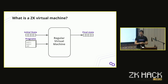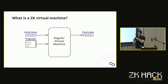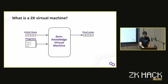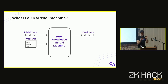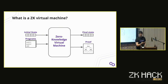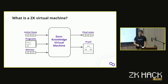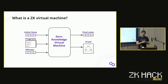Let me run quickly through zero-knowledge virtual machines. A normal virtual machine has inputs like an initial state and a program and outputs a final state. A zero-knowledge virtual machine like the Miden VM does exactly the same - we have an initial state as input, which we call stack, and programs that we can input. We get a final state plus a proof. We can also add a witness, a secret input that only the prover knows.